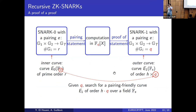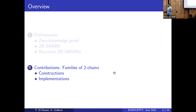In this chain construction, SNARK-zero has a pairing e with groups G1, G2, GT of order r, instantiated with an inner elliptic curve defined over F_q of prime order r. SNARK-one verifies the pairing computations that take place in F_q, instantiated with an outer curve E1 defined over a different field F_s, but with order equal to the base field of the previous curve. Given an integer q, we search for a pairing-friendly curve E1 of order h·q over any finite field F_s.